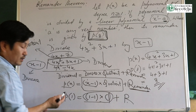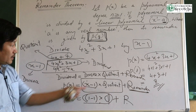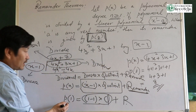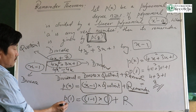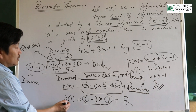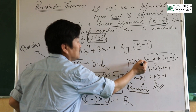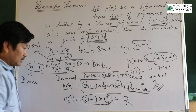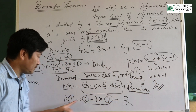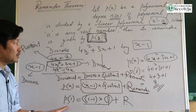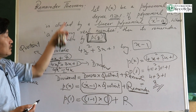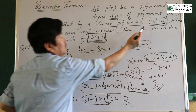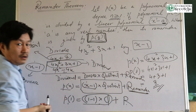Now the remainder r equals p of 1. So remainder equals p of 1. The divisor is x minus a, and the remainder is p of a. In general, for divisor x minus a, remainder equals p of a.